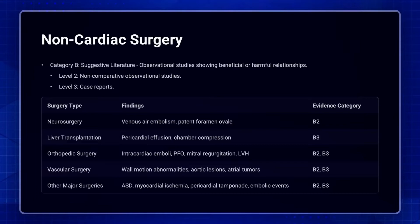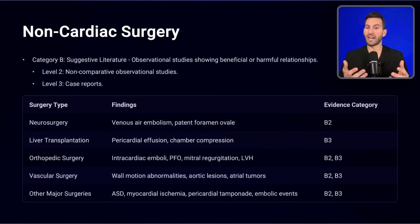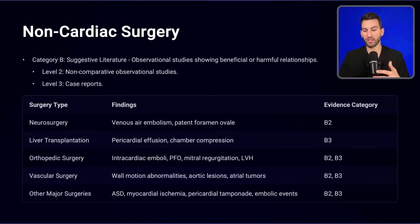There's a table listing many scenarios where TEE is used in non-cardiac surgery. Just to name a few: in neurosurgery to help detect venous air embolism or rule out PFOs in sitting craniotomies; in liver transplantation surgery with severe hemodynamic instability; in orthopedic surgeries, especially if the patient is high risk for pulmonary emboli; in vascular surgeries where cross-clamps are placed on the aorta; and in other major surgeries where you may detect myocardial ischemia, tamponade, or embolic events.